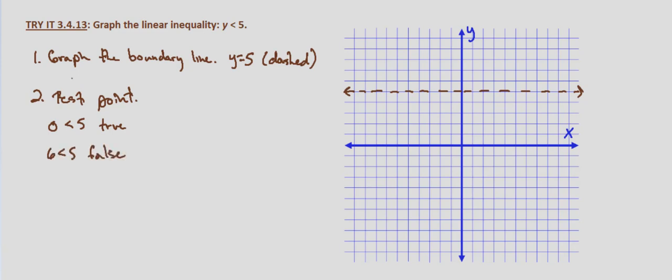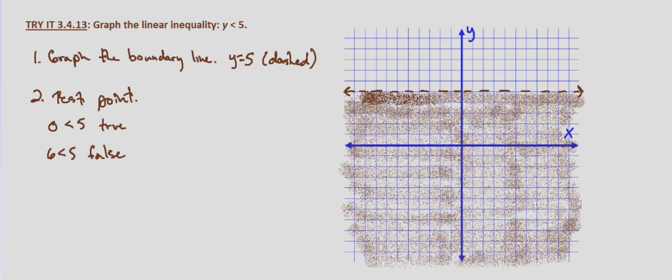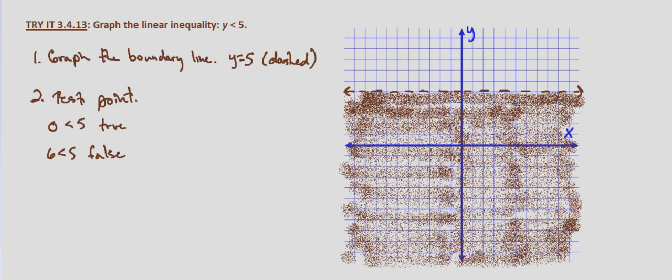So that indicates that we would want to shade everything below our line. And for horizontal and vertical lines, it's really that simple. And this gives us the graph for y is less than 5.